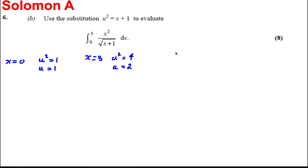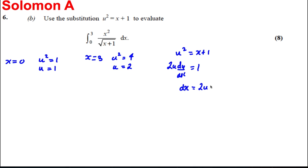We set u² = x + 1. Differentiating implicitly with respect to x: 2u · du/dx = 1, so dx = 2u du. Now we're in a position to rewrite the integral.